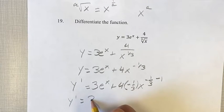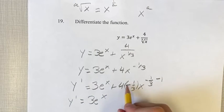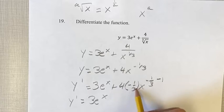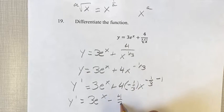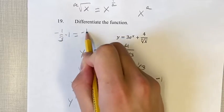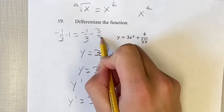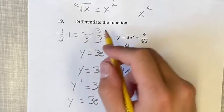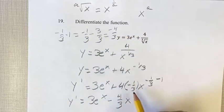Now this is something we can simplify. 3e^x still stays the same. We have plus 4 times negative 1/3 is minus 4/3 x. And this exponent, negative 1/3 minus 1, is negative 1/3 minus 3/3. Since 3/3 is equal to 1, common denominator, negative 4/3 is your exponent.